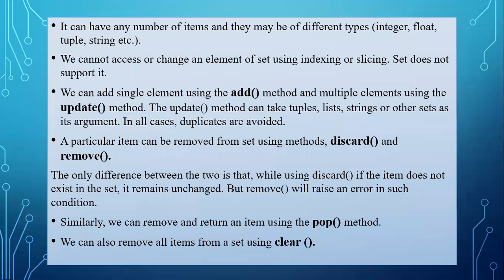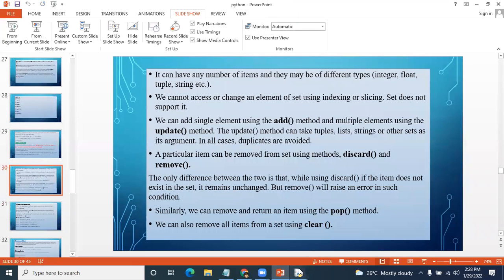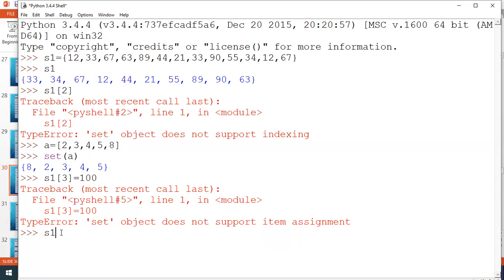A set can have any number of items of different types. We cannot access or change elements by indexing or slicing. To add a single item, use the add method. To add multiple elements, use the update method — update can take tuples, lists, strings, or other sets as arguments. In all cases, duplications are avoided. So either use add for a single element or update for multiple elements.